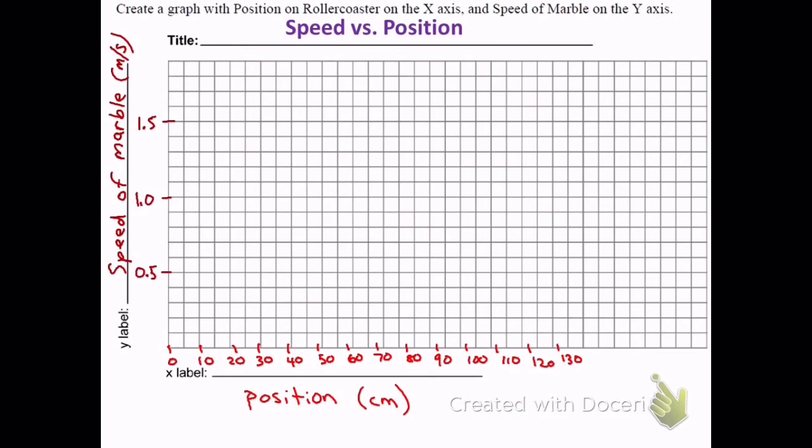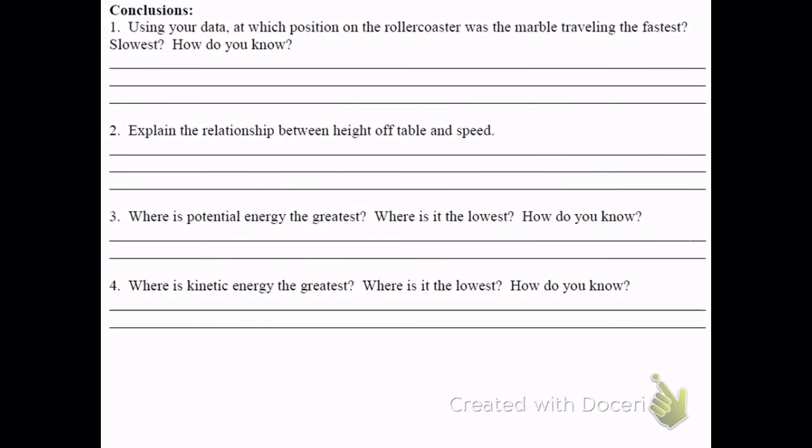And then you're going to do some analysis. Your conclusion questions are going to ask you about how height relates to speed, which relates to potential and kinetic energy. And hopefully you'll really understand the concepts of how potential energy is related to height and kinetic energy is related to speed. And these two energies can transform back and forth as the marble gets higher and slower or lower and faster. Good luck.